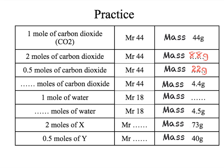For the third question, we have been given the mass and the MR and asked to work out our moles. So we do our mass divided by our MR — 4.4 divided by 44 — giving us 0.1 moles of carbon dioxide. The next two questions use the same principles. For the first, we are given one mole and an MR, so we multiply these together to give us a mass of 18 grams of water. Then for the second, we divide 4.5 by 18 to give us 0.25 moles.